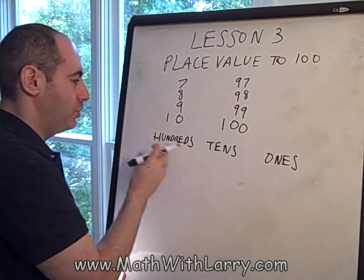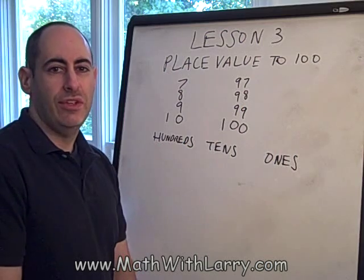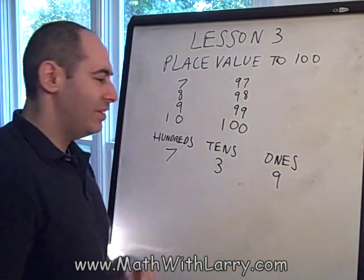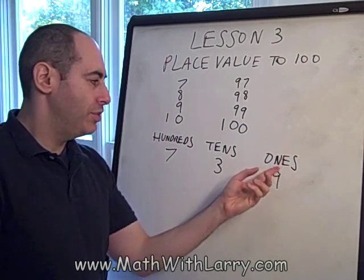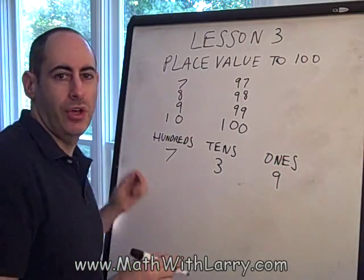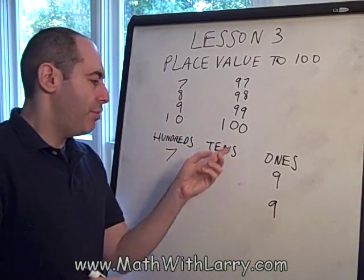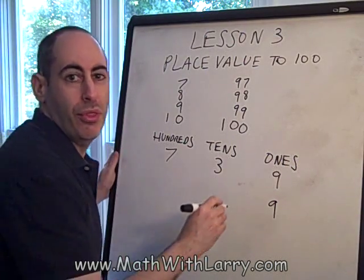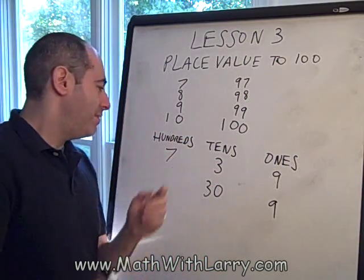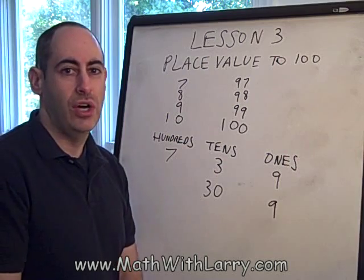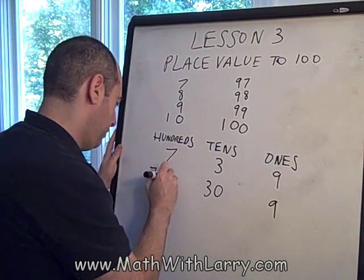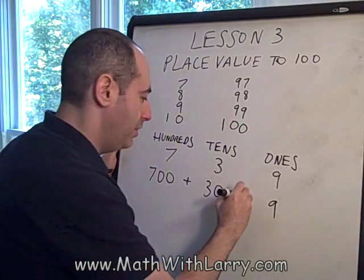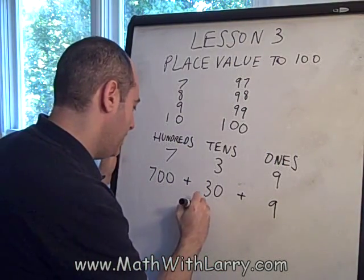In later lessons we'll expand the chart, but for now let's think about the number 739. I'm going to write that number like this. We have 9 in the 1's place — think of that as just 9 singles, $9. We have 3 in the 10's place, which means 3 tens — think of it as 3 $10 bills, which actually makes 30. And we have 7 in the 100's place — that actually makes 700. So when we say 739, we really mean 700 plus 30 plus 9, which equals 739.